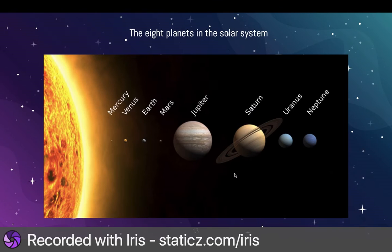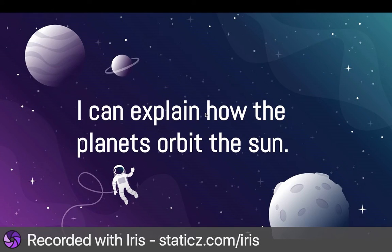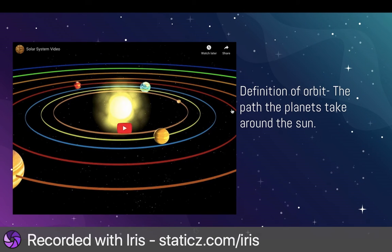First, let's review the planets — the eight planets in the solar system: Mercury, Venus, Earth, Mars, Jupiter, Saturn, Uranus, Neptune. These planets all orbit the sun. But what does orbit mean? The definition of orbit is the path the planets take around the sun.